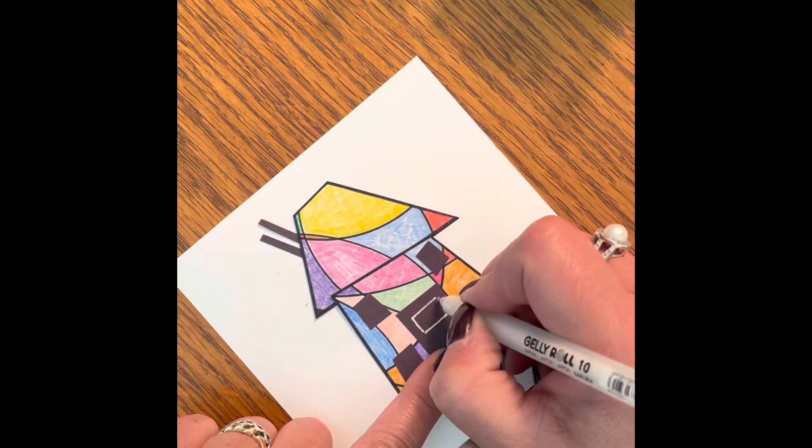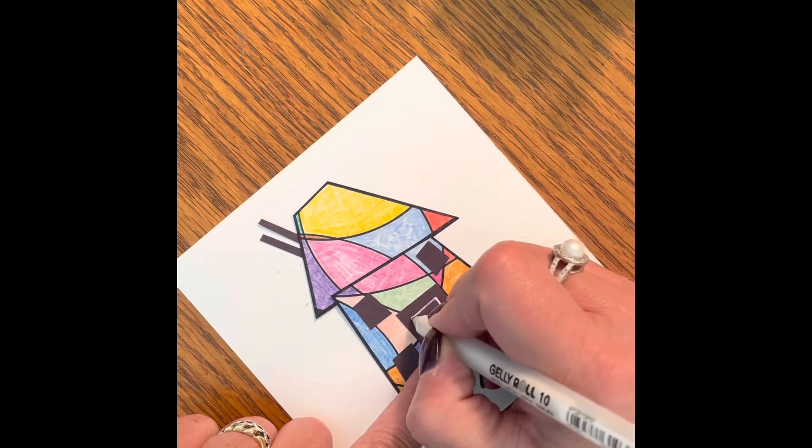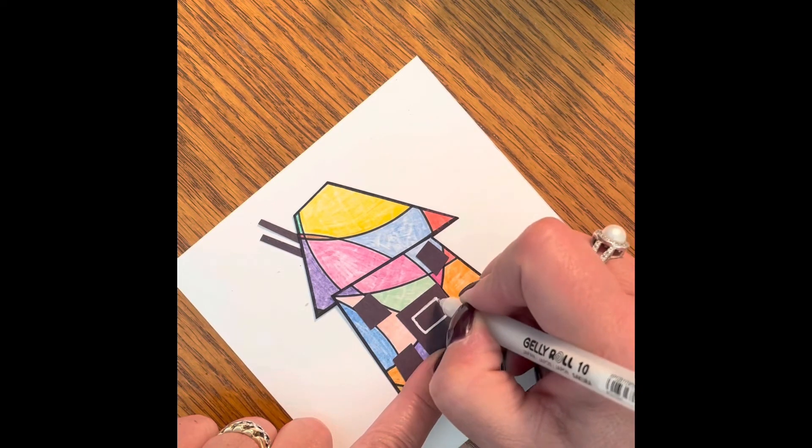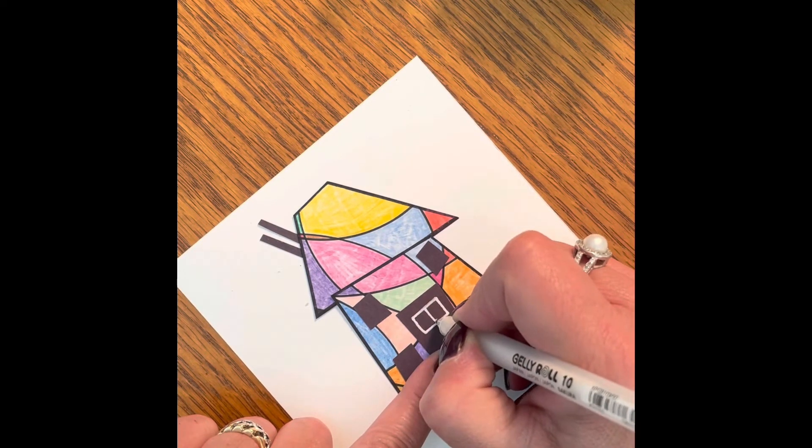I have chosen a black paper. So in order to draw the accents, I'm choosing to use a white gel pen.